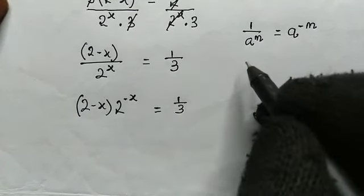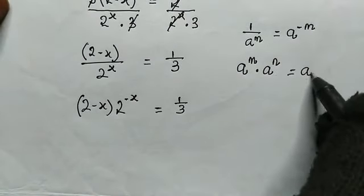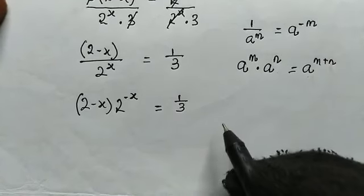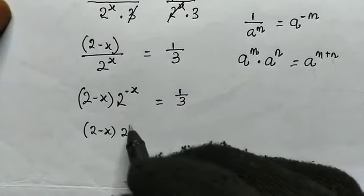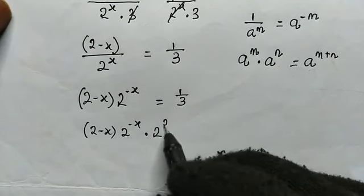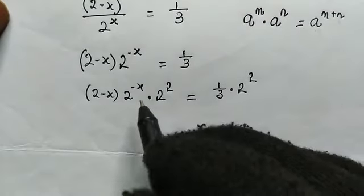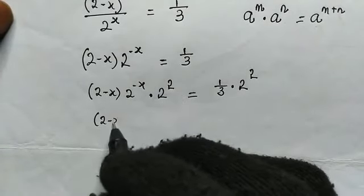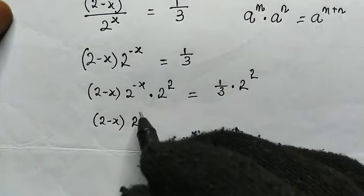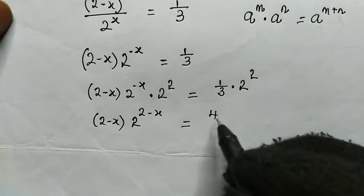So from here, we're trying to make the power of 2 equal to the coefficient. Let us take note that when we have a to the power of m multiplied by a to the power of n, since the bases are equal, we can just add the powers. So what happens when we multiply both sides by 2 to the power of 2? We get 2 minus x times 2 to the power of negative x plus 2, which equals 1 over 3 multiplied by 2 to the power of 2. This gives us 2 minus x times 2 to the power of 2 minus x, and this equals 4 over 3.